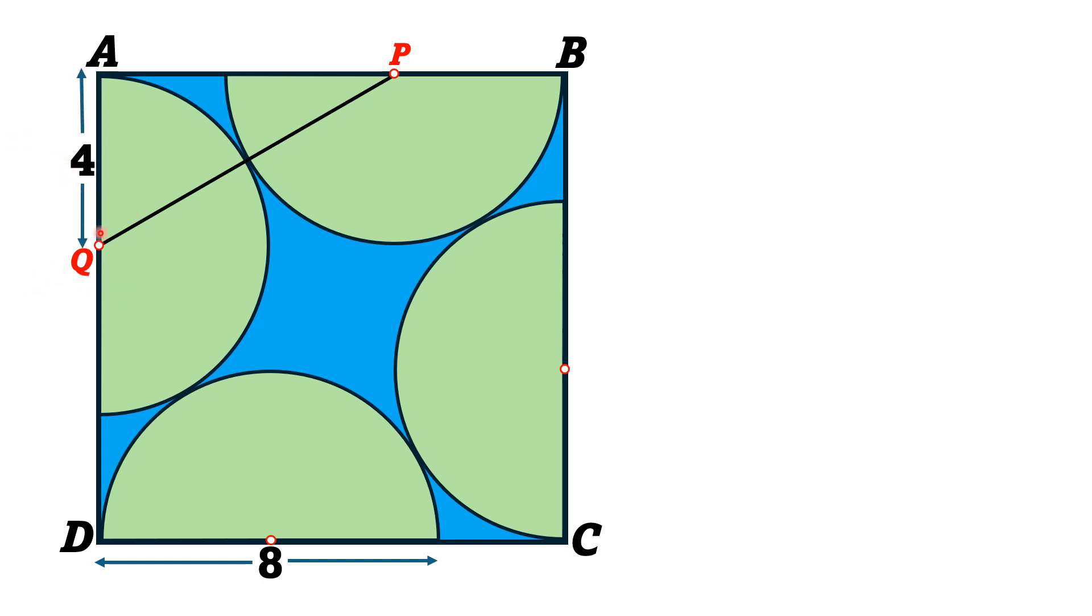Now, since diameter of each semicircle is 8 units, so this length which is actually the radius of semicircle is 4 units. This is also the radius of semicircle which is 4 and this length is also 4 units because it is again the radius of semicircle.